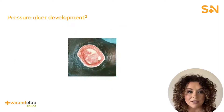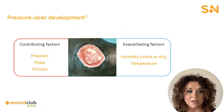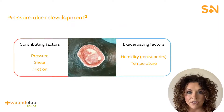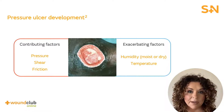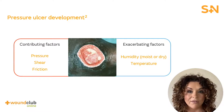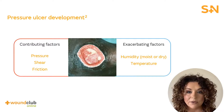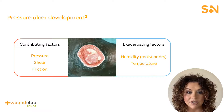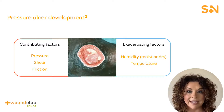Let's consider the factors contributing to pressure ulcer development, which are pressure, friction and shear. Humidity and temperature are not direct causes of pressure injuries. However, they are exacerbating factors. Moisture and temperature can weaken the skin and also increase the risk of friction and shearing of superficial tissue, whereas very dry skin becomes brittle and has increased risk for fissures or cracks.